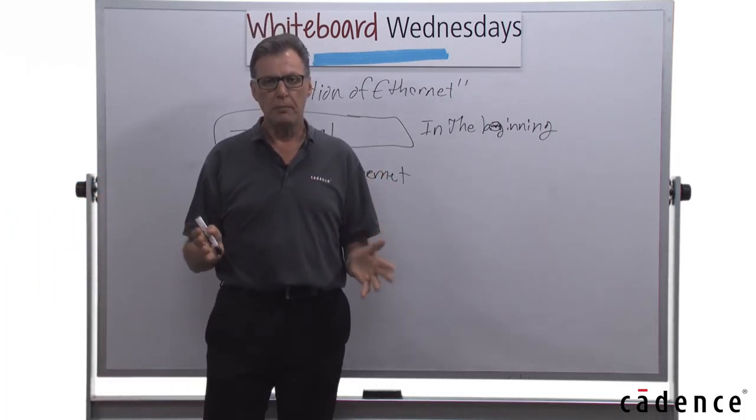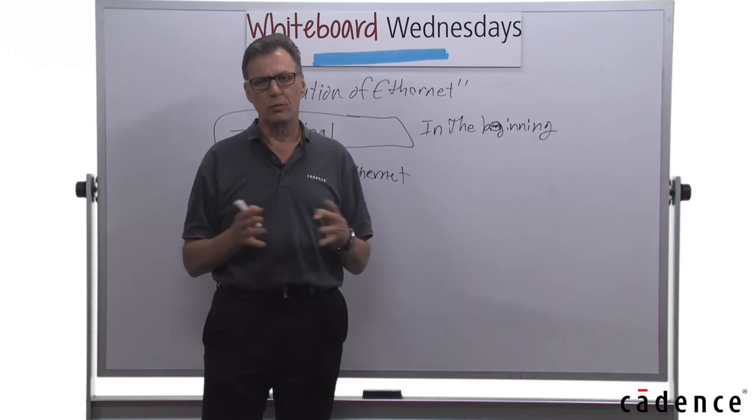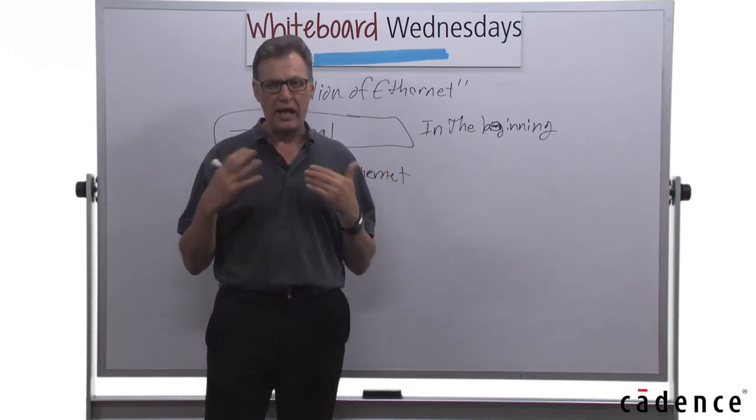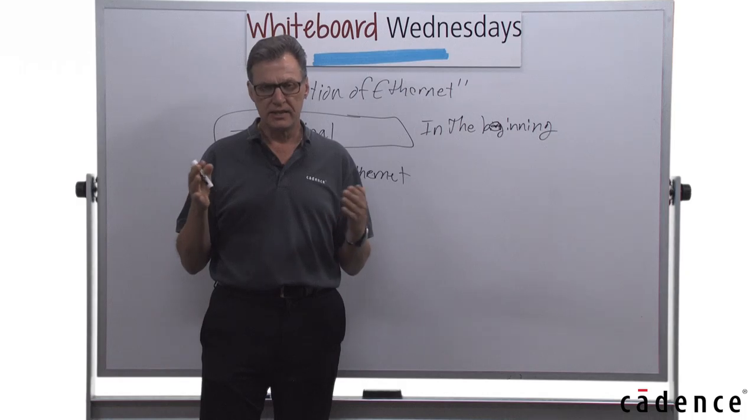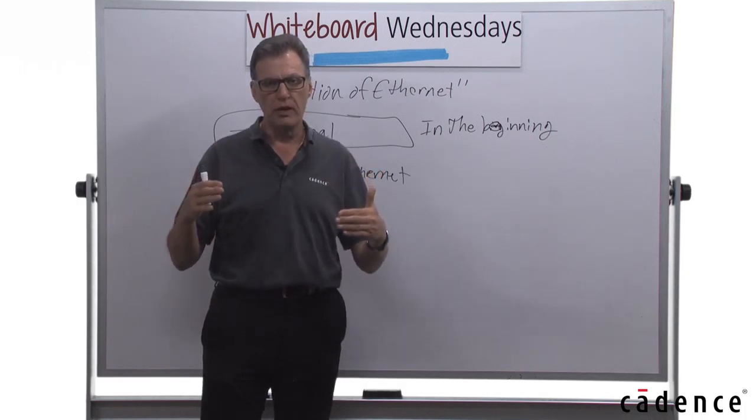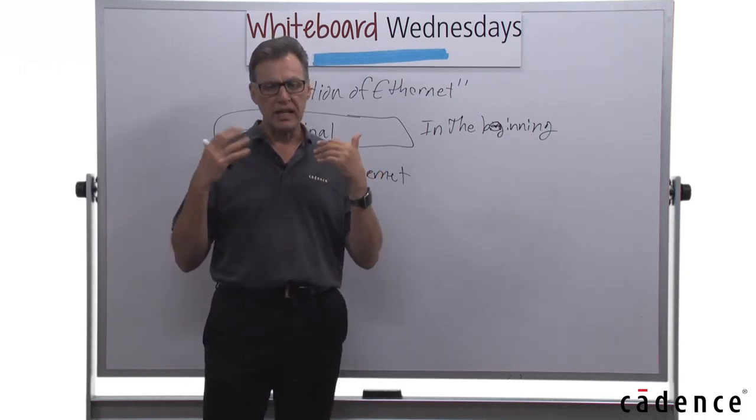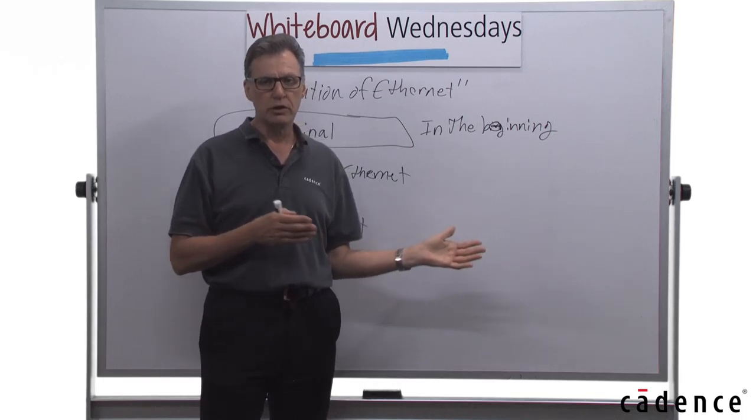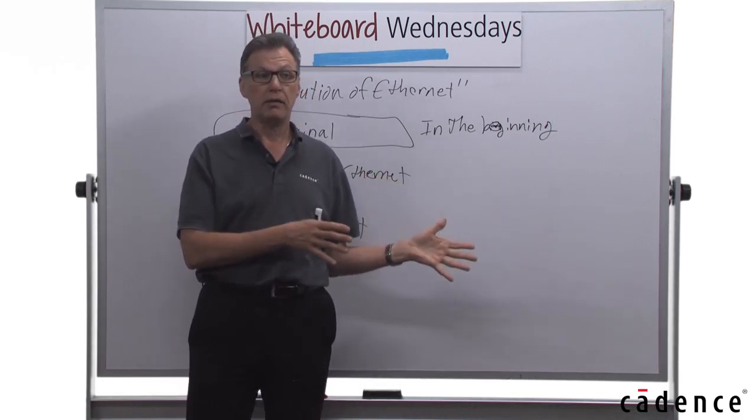This was the world. Everything was point-to-point. People got information, but it wasn't really shared, and it wasn't really gathered in a very uniform way. This is the world that drove part of the thinking behind the evolution of Ethernet, which we'll talk about in the next section.